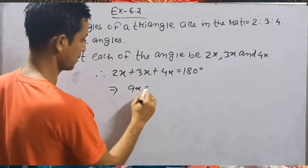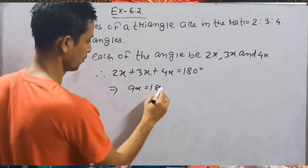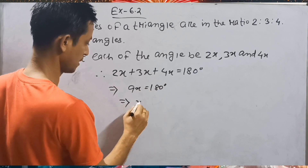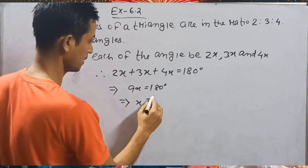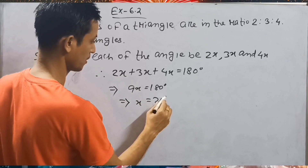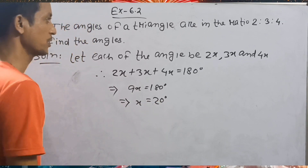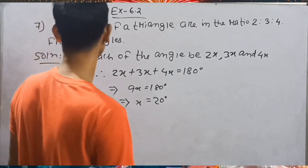So, 9x is equal to 180 degrees. Dividing both sides by 9, x is equal to 20 degrees.